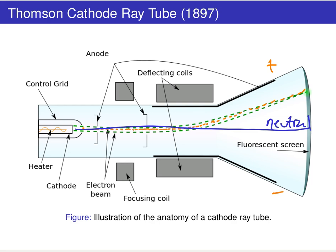Because the green lines deflect in this particular direction, we conclude that this beam of particles is negatively charged. These particles coming out of that sample are negatively charged, and we call these particles electrons.